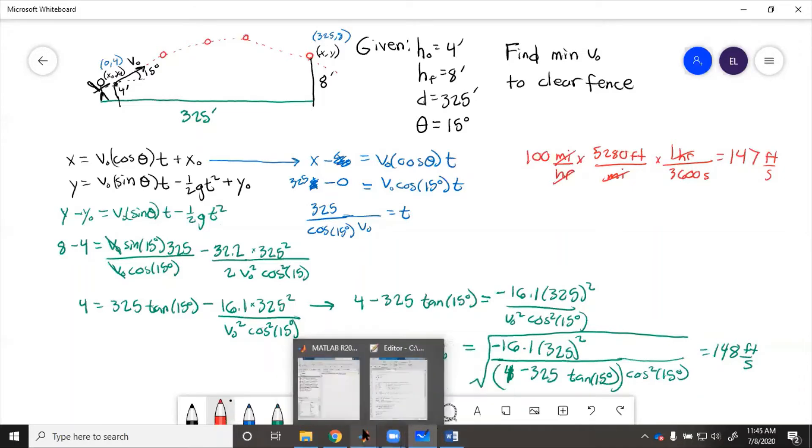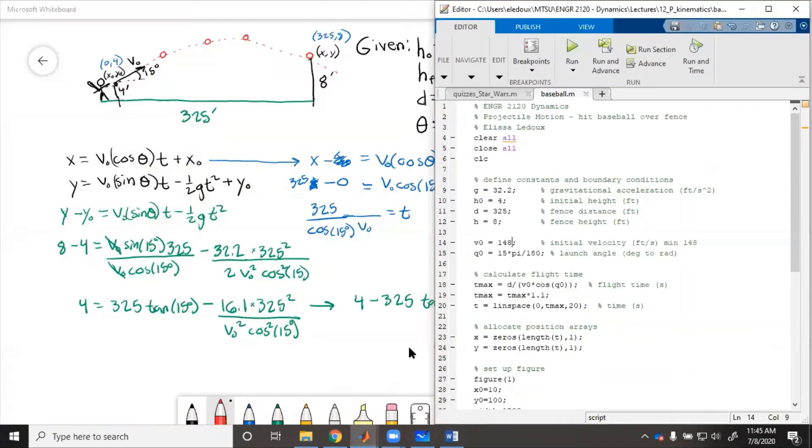Now we'll look at a simulation of this and see. So you can see here I put in values for gravity, initial height, distance, final height, and I put in the 148 and the initial angle. So we'll see here if it is 148 if the ball goes over the fence.